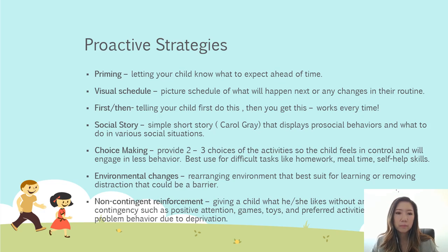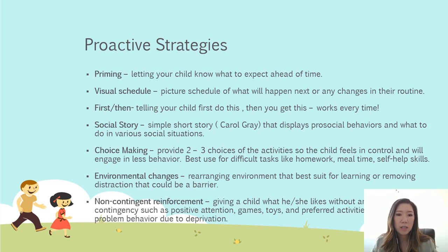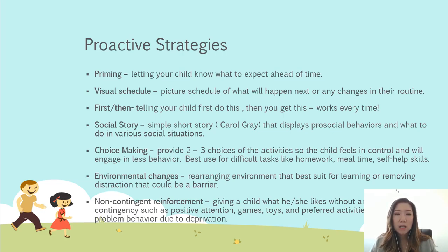Choice-making is best used for difficult tasks like homework, mealtime, or self-help skills. Environmental changes are great as well — make sure the environment is best suited for learning and remove distractions that could be a barrier. Lastly, non-contingent reinforcement is an ABA term meaning you're giving your child what they like without any expectation or contingency. For example, if your child seeks attention and engages in problem behavior, overcompensate with positive attention and quality time freely — without expecting your child to do anything. Spend 30 minutes playing with your child on the weekend just having fun. This will help decrease problem behavior caused by deprivation of attention.